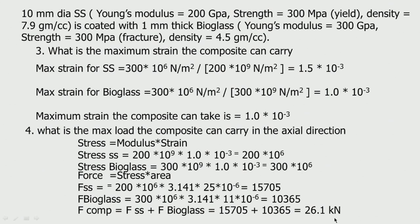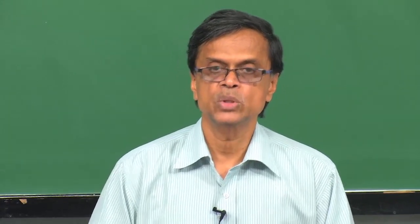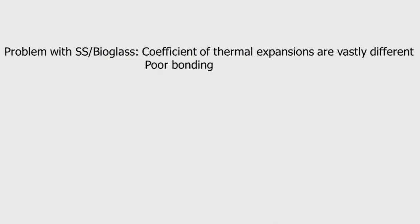But there is a problem — generally we cannot use bioglass with stainless steel. Why? They have a different coefficient of thermal expansion. Stainless steel has a much higher coefficient of thermal expansion, so if there is a change in temperature it will expand whereas bioglass will not expand. So there will be a crack, poor bonding between these two materials, and very different thermal expansions will cause the bioglass to break when temperature changes. Also, bonding between bioglass and stainless steel is very very poor. Thank you very much for your time.